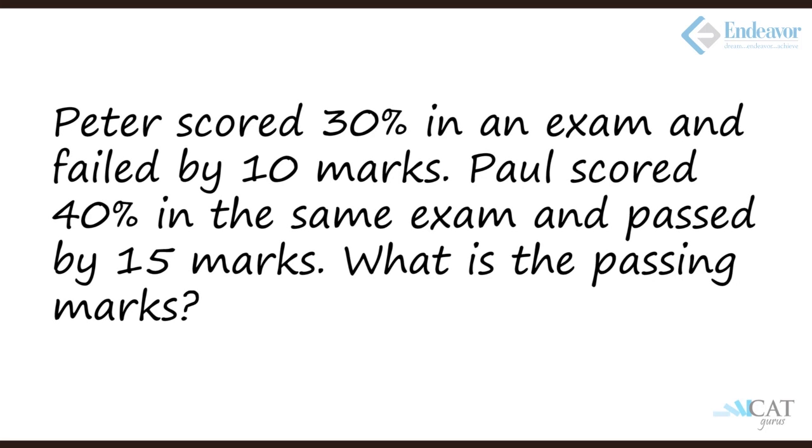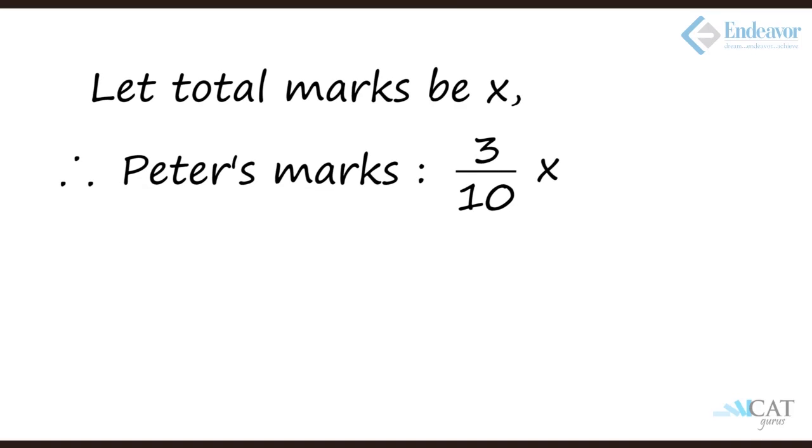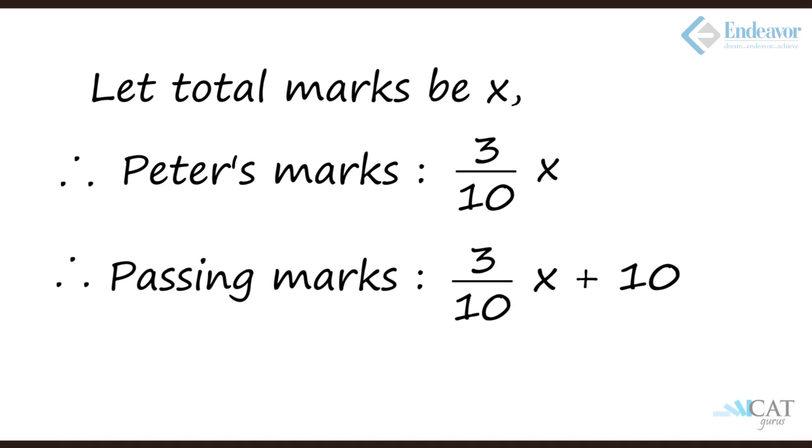Let us take another example. Peter scored 30% in an exam and failed by 10 marks. Paul on the other side scored 40% in the same exam and passed by 15 marks. What is the passing marks? So if I look at Peter, let us assume that the total marks was x. So he scored 30%, which is nothing but 3 upon 10. So 3 upon 10x, if we add 10 to it he would have passed. So 3 upon 10x plus 10 is passing marks.